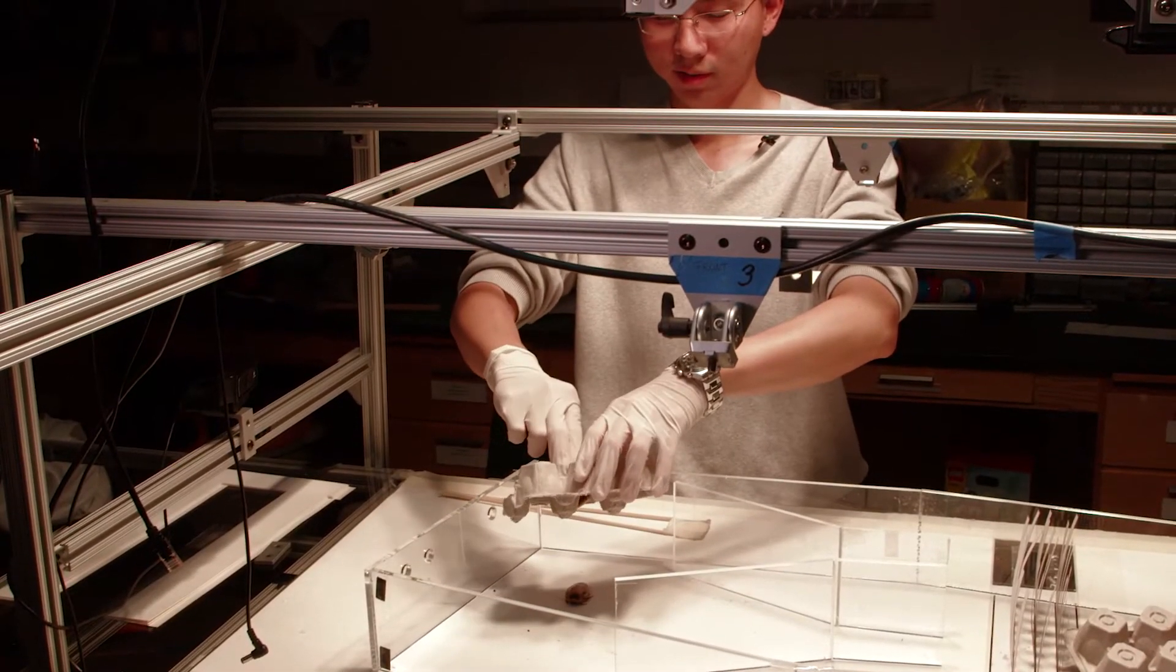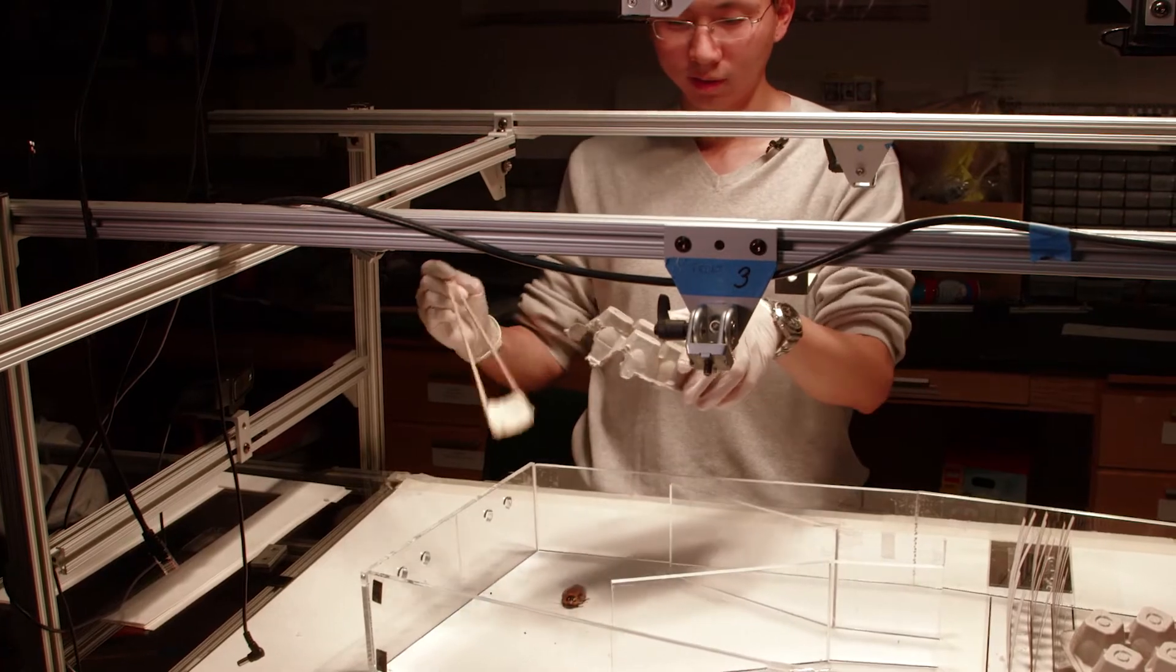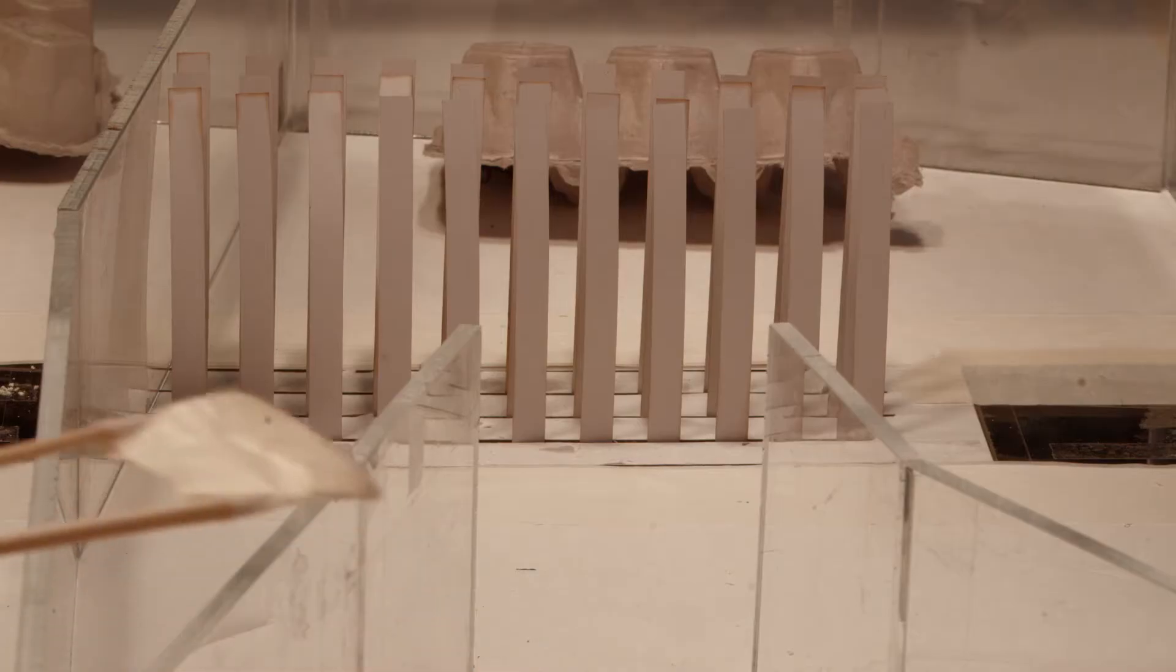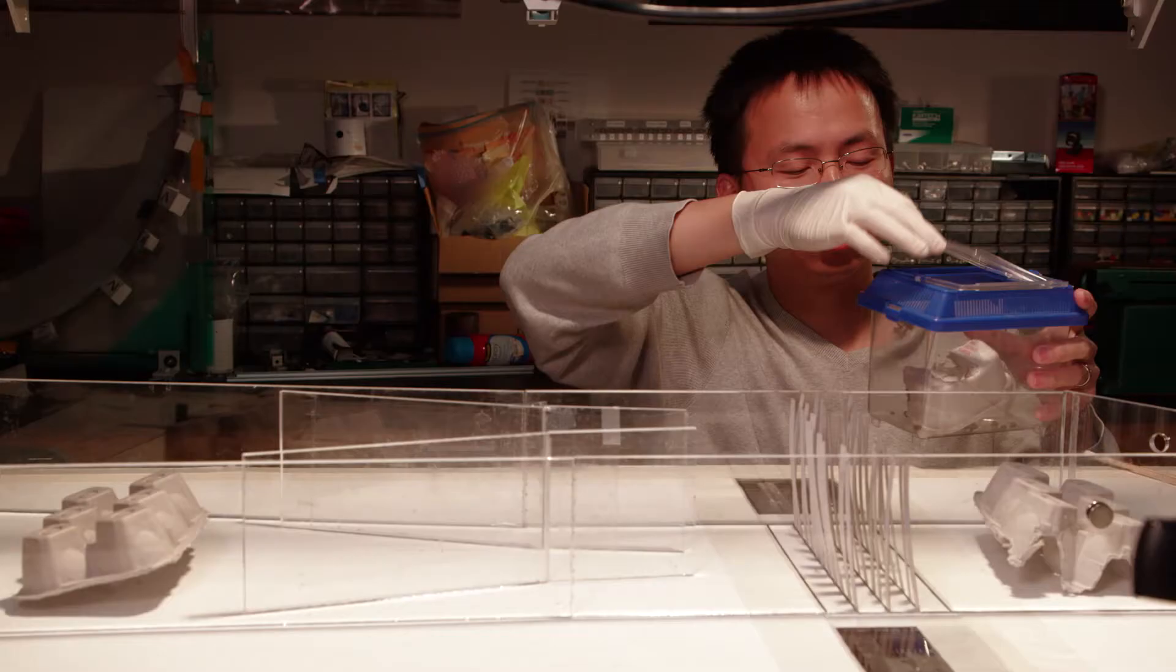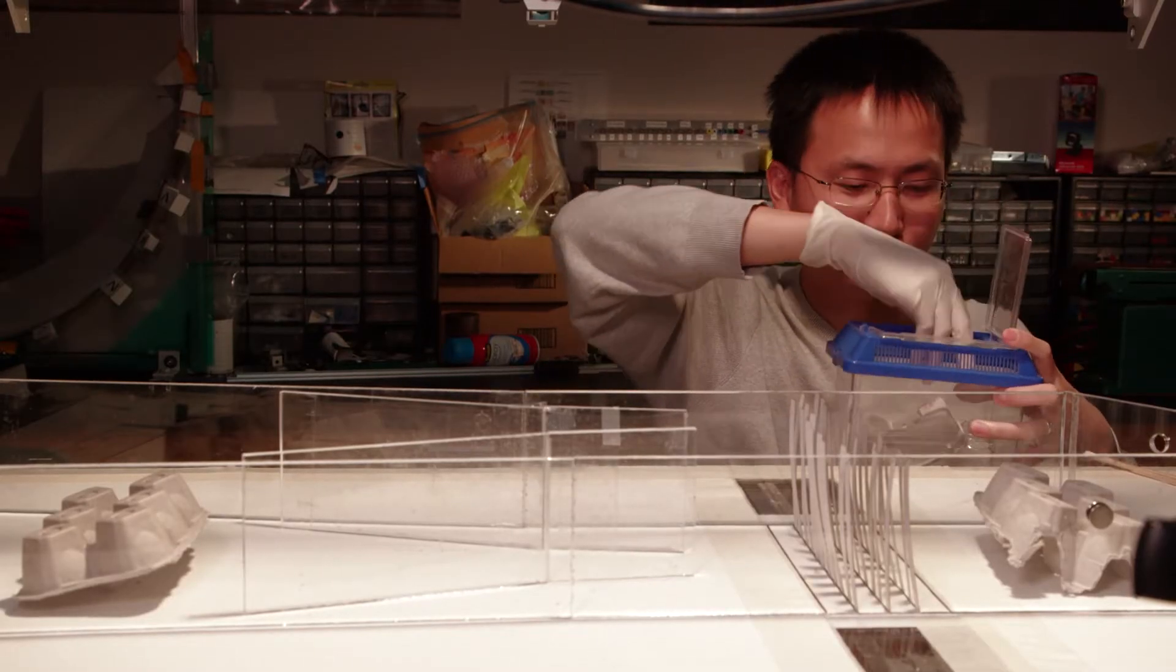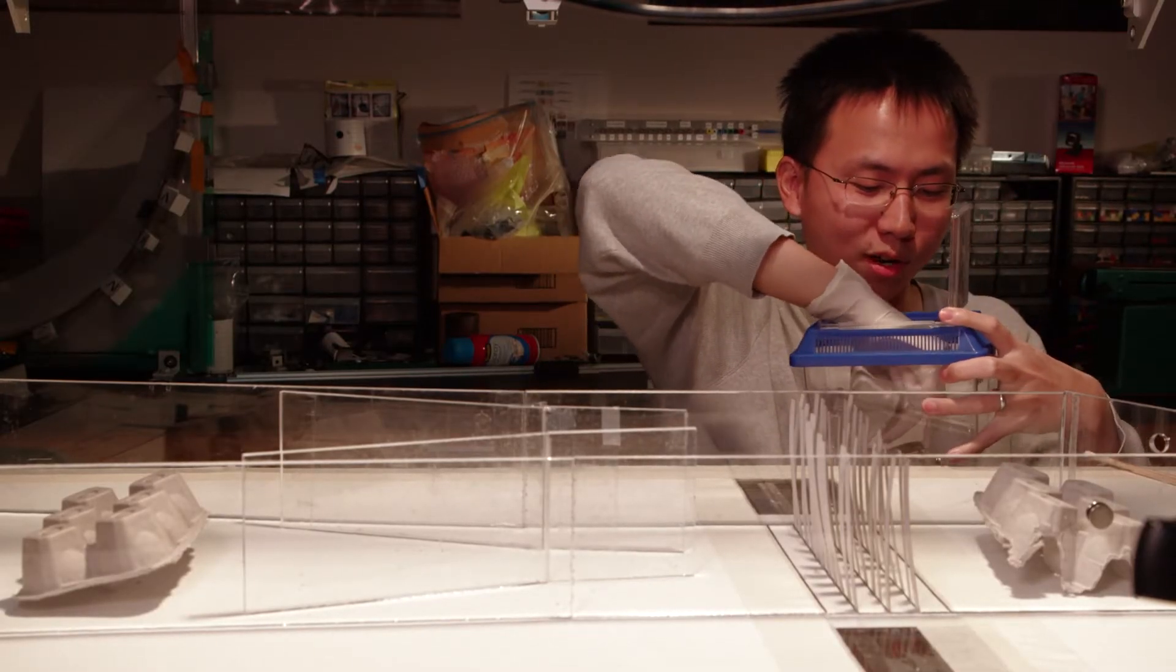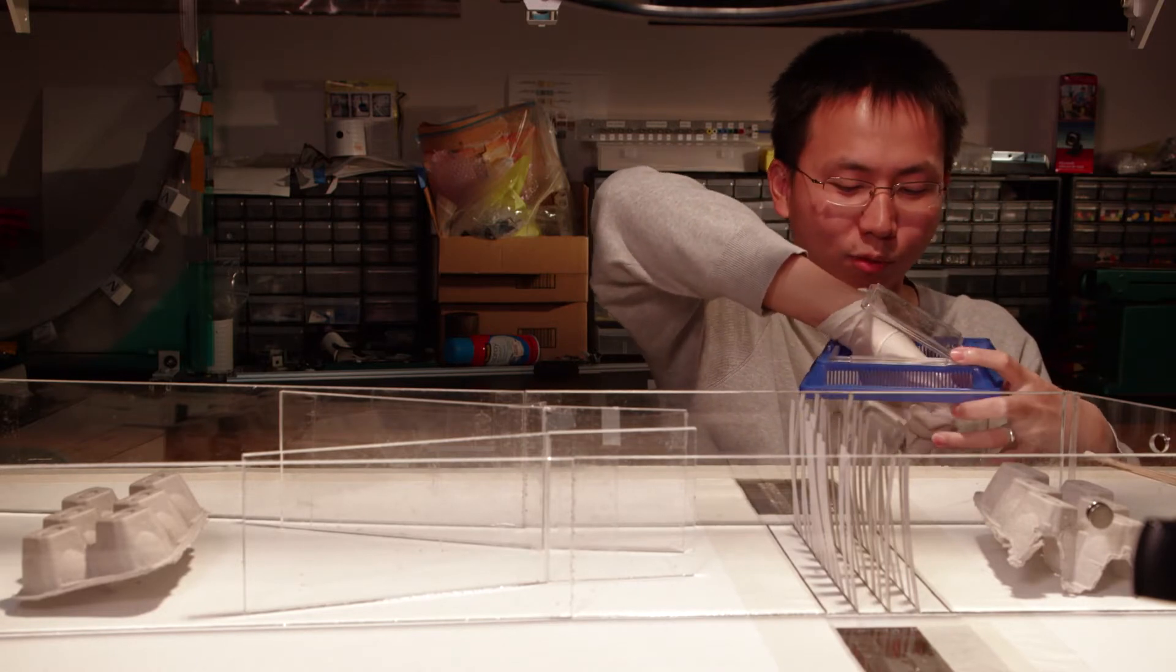UC Berkeley biophysicist Chen Li built this obstacle course to study how roaches wiggle their way through tight spaces. So here we have a few cockroaches, the discoid cockroach that live in tropical rainforest.